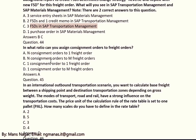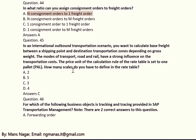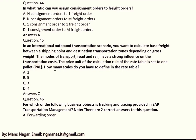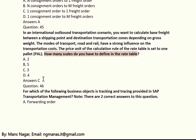In which ratio can you assign consignment orders to freight orders? In an international outbound transportation scenario, you want to calculate base freight between a shipping point and destination transportation zone depending on gross rate. The modes of transport — road, rail, or ship — have a strong influence on transportation cost. The price unit of the calculation rules is one pallet (PL). How many scales do you have to define in the rate table? The answer is C, which is three.